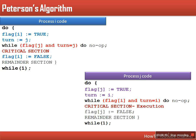However, the problem with Peterson's algorithm is busy waiting. If one process is prevented from entering its critical section and these conditions are true, that process will be stuck in the loop, keep on executing and checking the condition again and again.